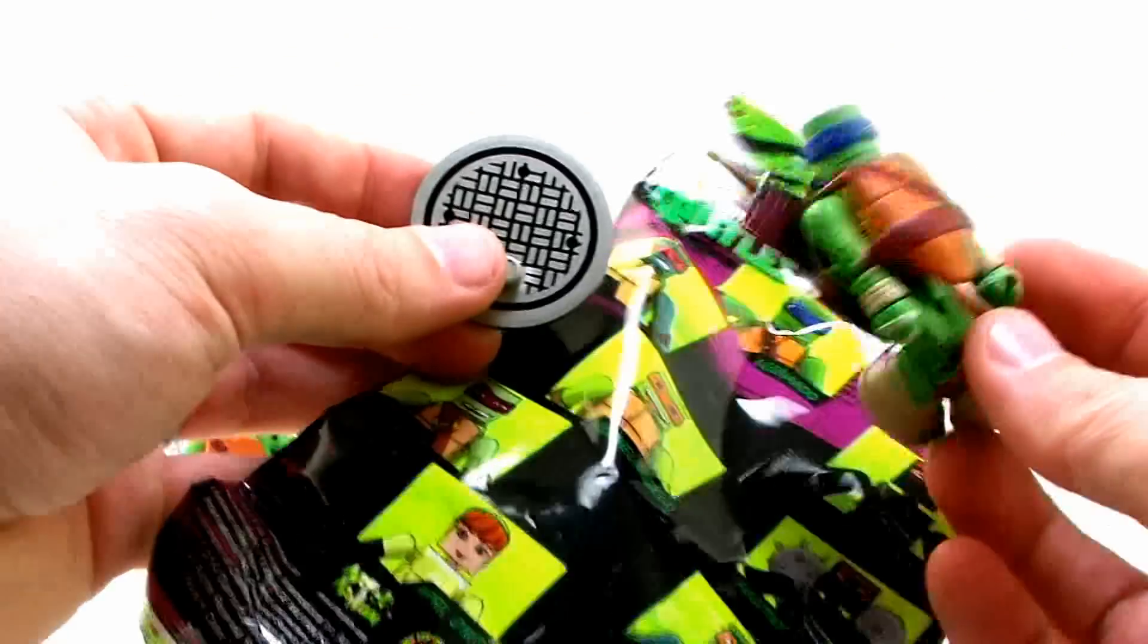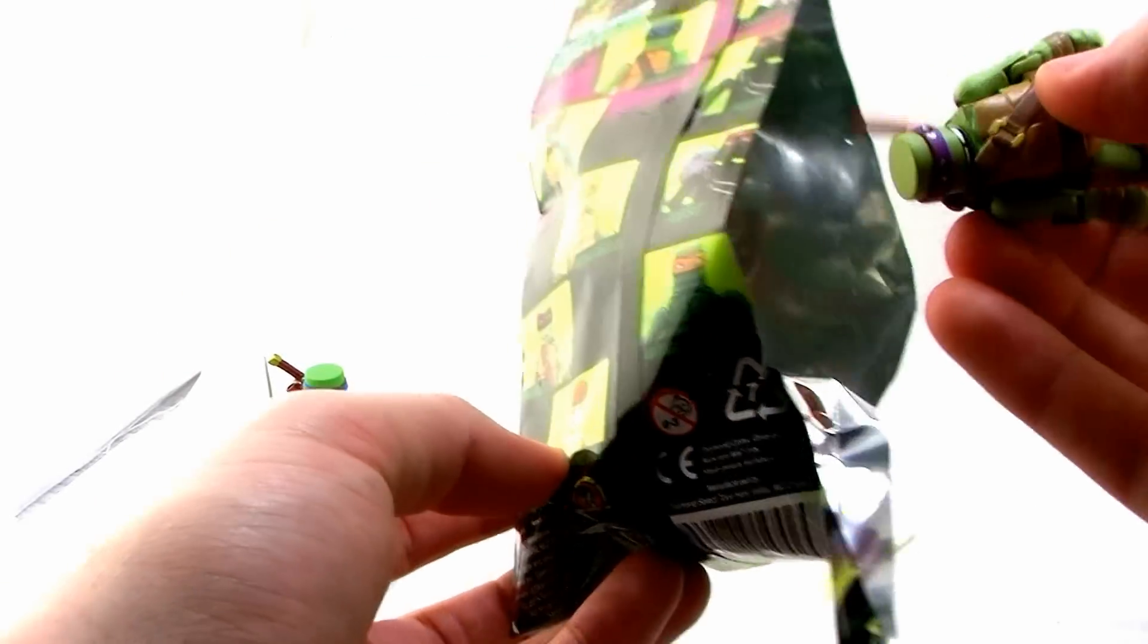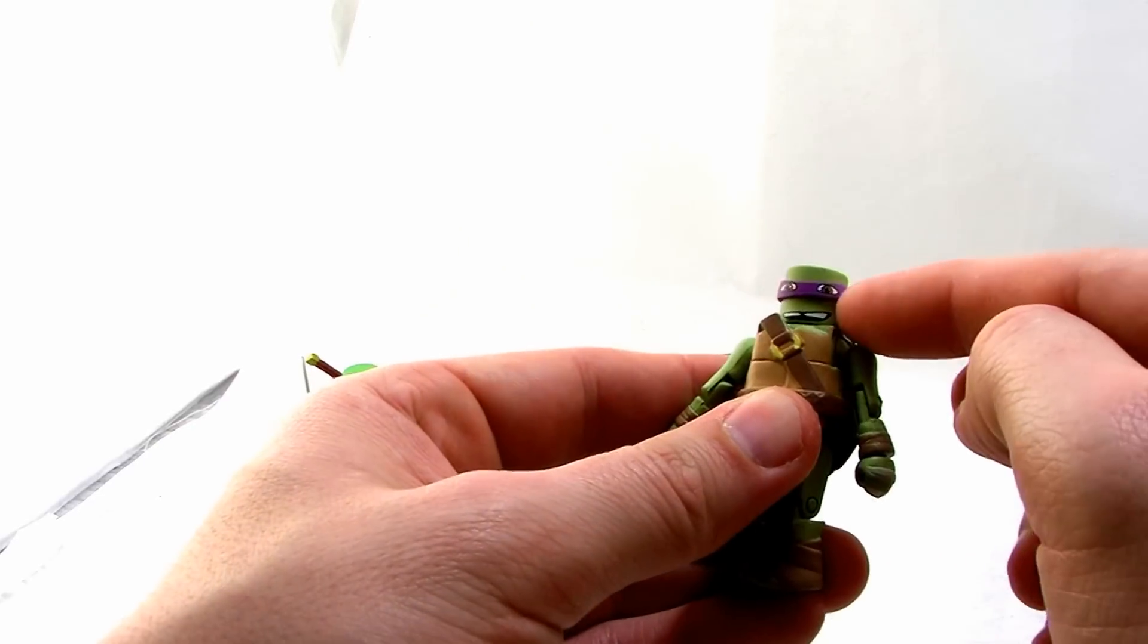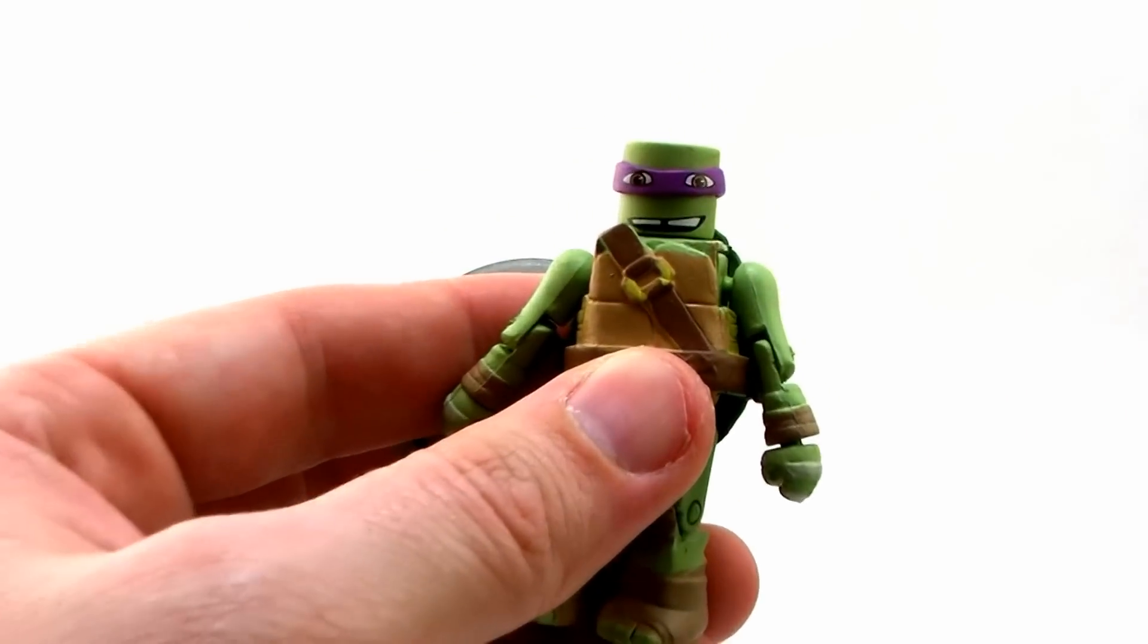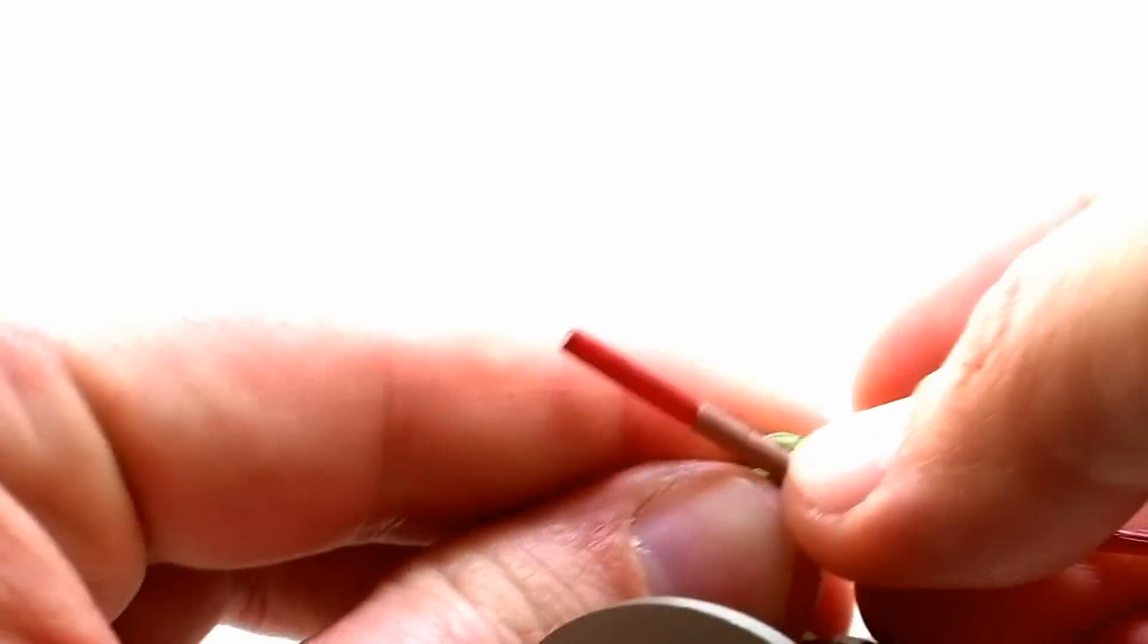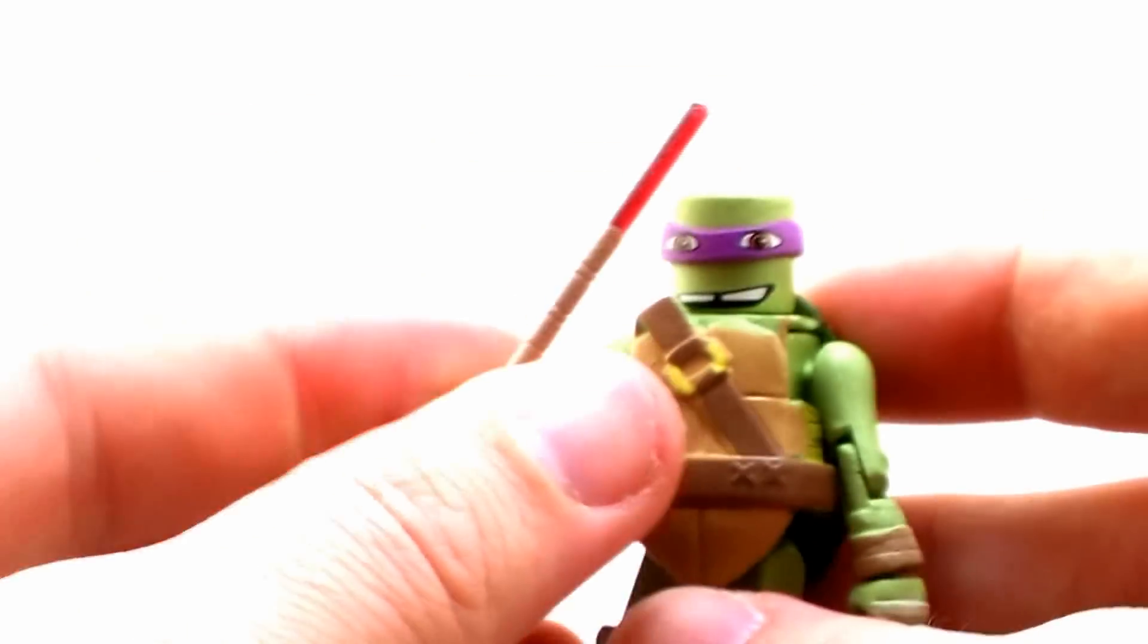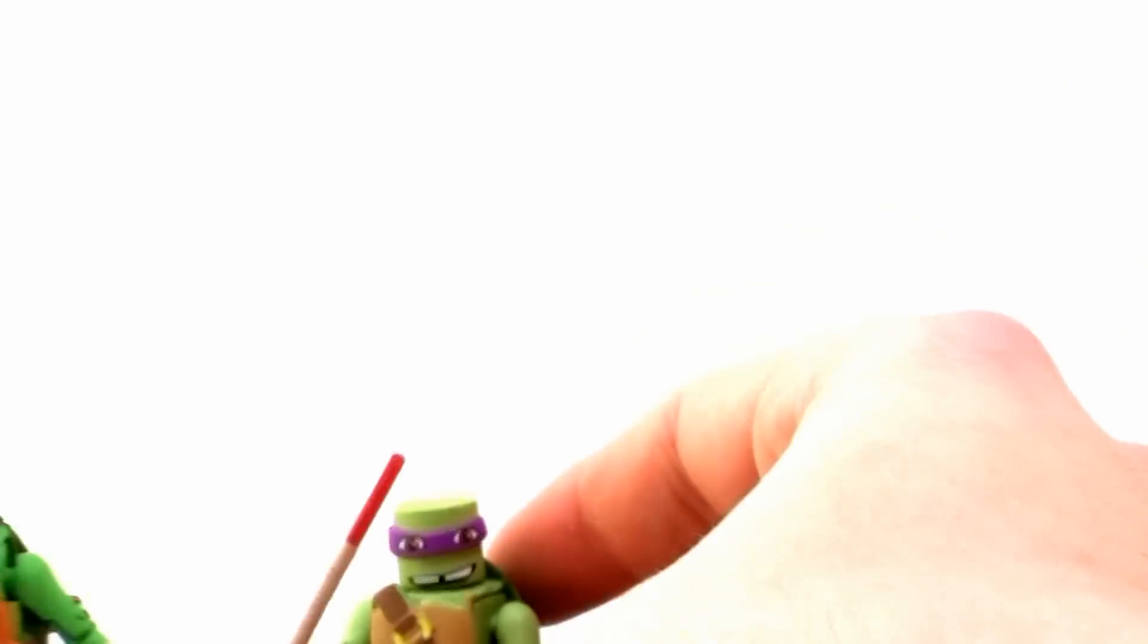We're going to move right along with our next bag to open up here. And we get Leonardo number two. So we're going to put him off to the side and we're going to keep on opening. So third pack in, I've already got myself a double. Kind of a bummer. Let's see who we get this time. Donatello. Excellent. Very cool look. You see he's got kind of those wider eyes there and he's got the little gap in his teeth, which of course is his signature look in the new series here. And we got his bo staff weapon.